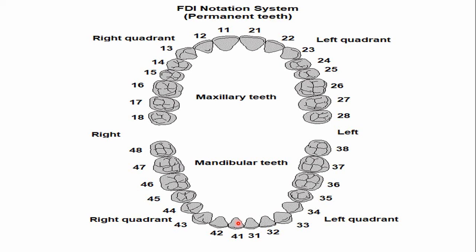...the number of the mandibular left central incisor is 3,1 — not 31, but 3 comma 1. And for the right mandibular central incisor, the number is 4,1 — not 41 — because 1 indicates the number of the tooth and 4 indicates the quadrant. If you want to learn more about tooth notation systems, I have given the link of the tooth numbering system lecture in the description of this video.